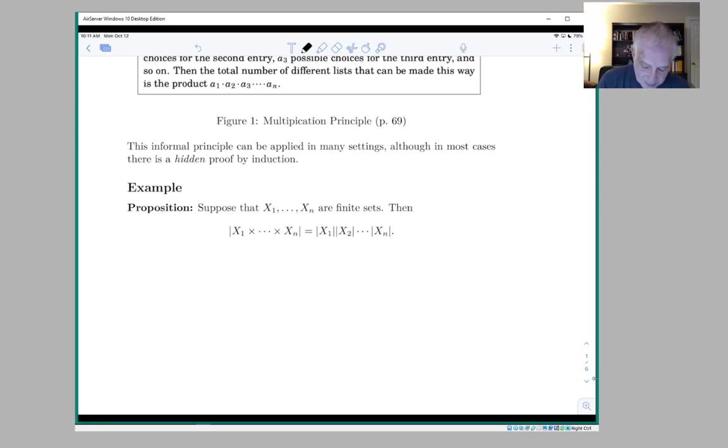So just as a very simple example, if x1 is the set {a, b}, and x2 is the set {1, 2}, then x1 cross x2 is the collection of ordered pairs (a, 1), (a, 2), (b, 1), and (b, 2). In other words, it's the collection of lists of length 2 where the first element is chosen from x1, the second element is chosen from x2, and the number of elements in x1 cross x2 is 4.